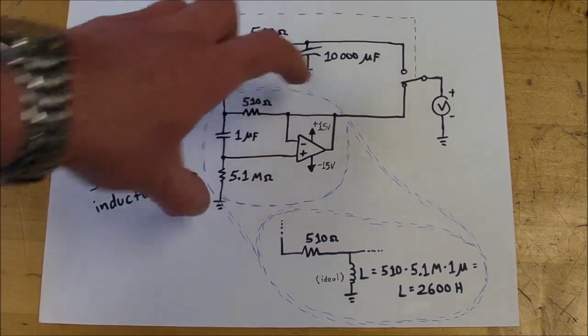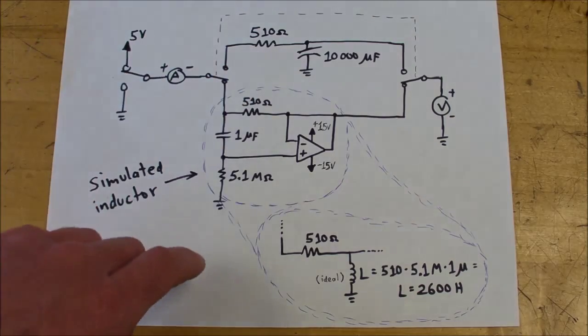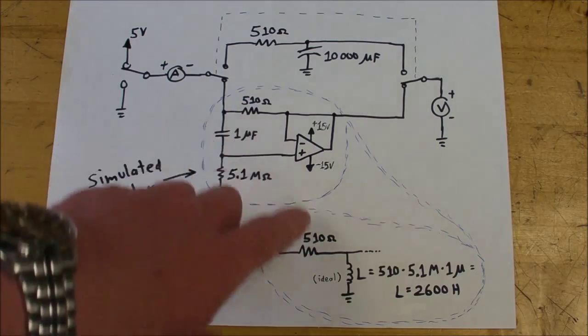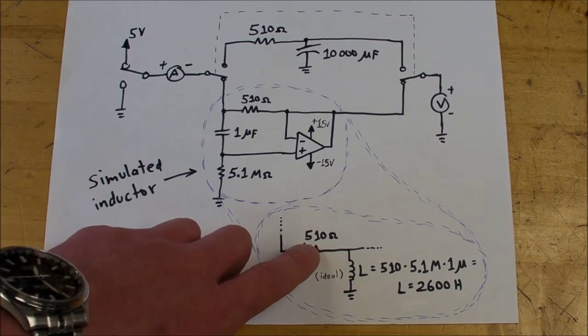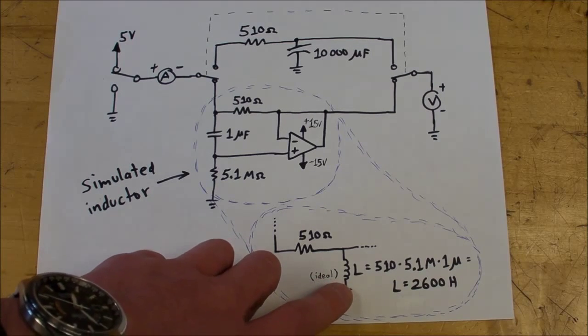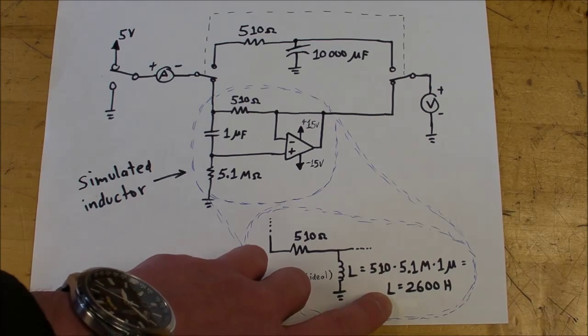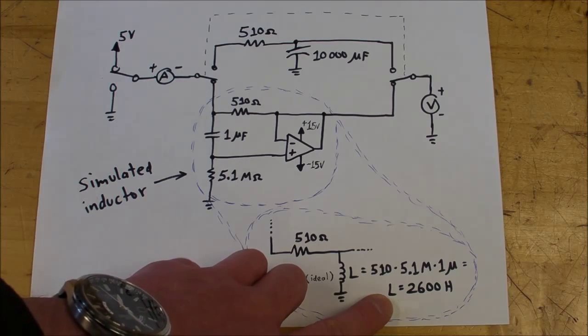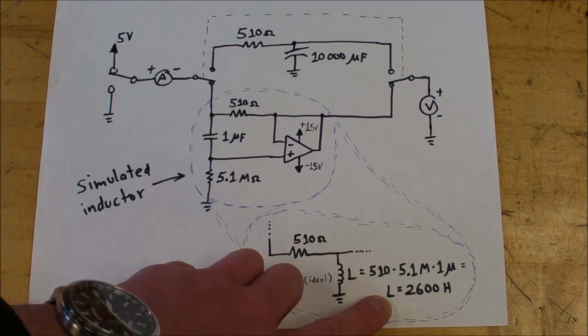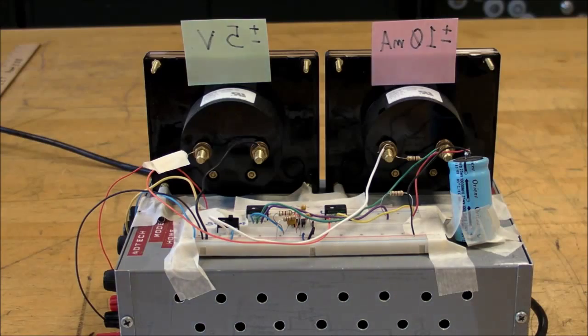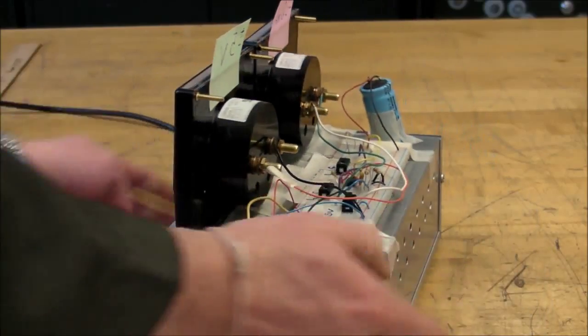But this whole op-amp circuit here is simulating an inductor. In this case, it basically simulates a 510 ohm resistor in series with an ideal or nearly ideal inductor of 2600 Henry's - something which would be very difficult to construct, that large of an inductance with negligible series resistance.